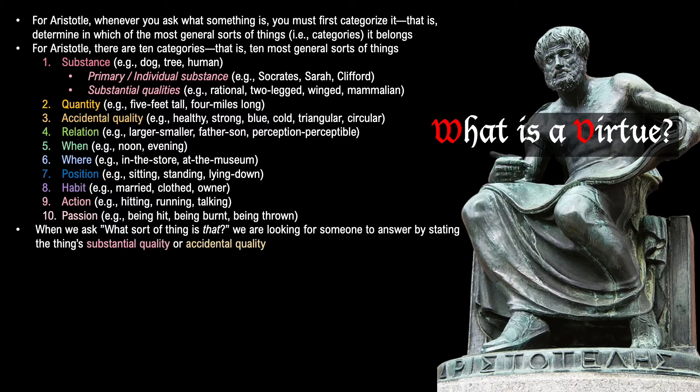Examples of when and where are noon, evening, or in the store, at the museum. Examples of position are sitting, standing, lying down. Examples of habit are married, clothed, and owner. Examples of action and passion have to do with motions, which are either active or passive. Active motions, which are actions, are things like hitting, running, and talking, whereas passive motions, or passions, are things like being hit, being burnt, and being thrown.